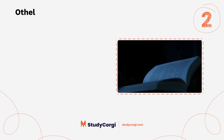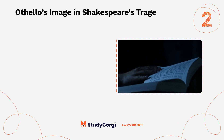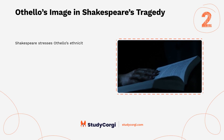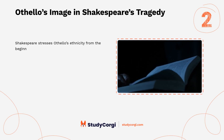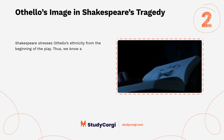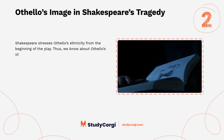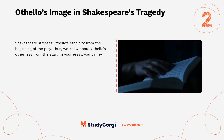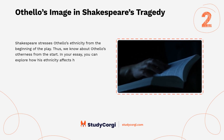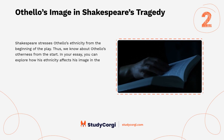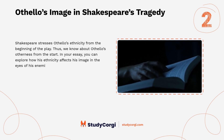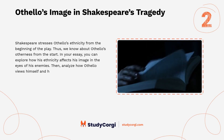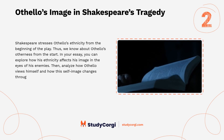Othello's image in Shakespeare's tragedy. Shakespeare stresses Othello's ethnicity from the beginning of the play, thus we know about Othello's otherness from the start. In your essay you can explore how his ethnicity affects his image in the eyes of his enemies, then analyze how Othello views himself and how that self-image changes throughout the plot.